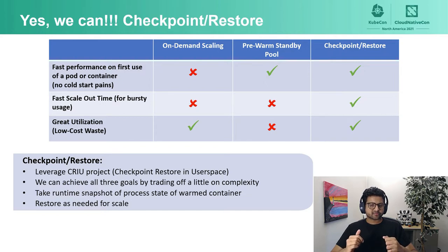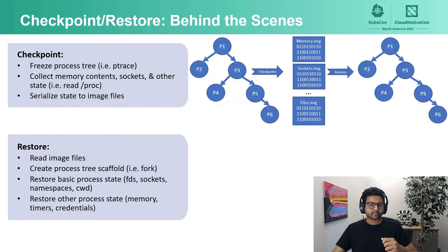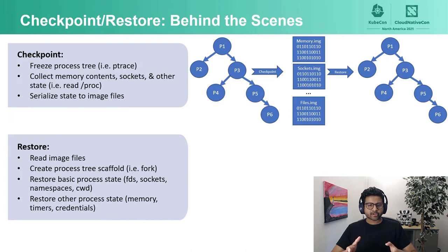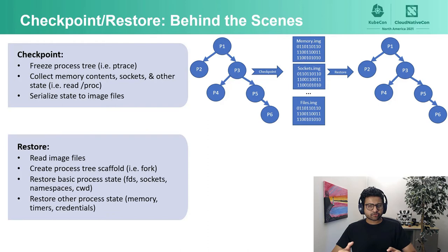How does Checkpoint Restore work? Checkpoint freezes a running application — or any Linux processes for that matter — and serializes the state to disk as a collection of files. These files include any file-related info, sockets, namespaces, memory, etc. Restore then creates a process tree by reading these collection of files and restores the process state.